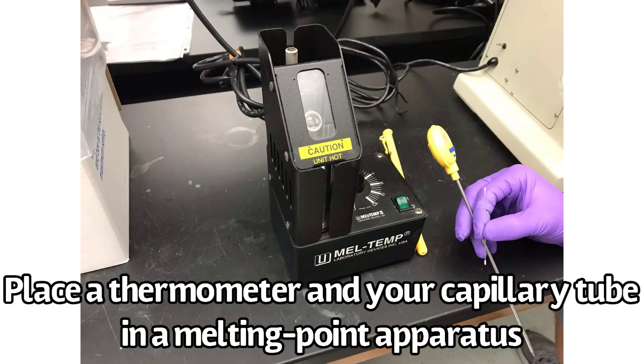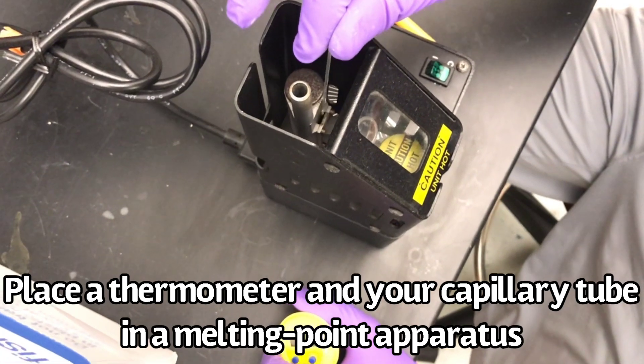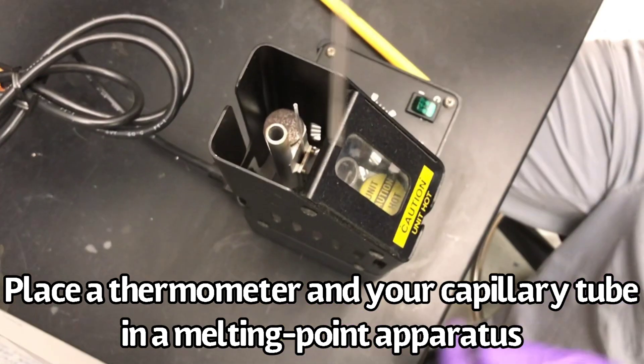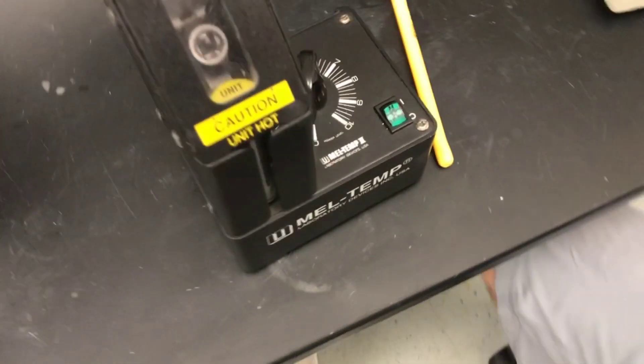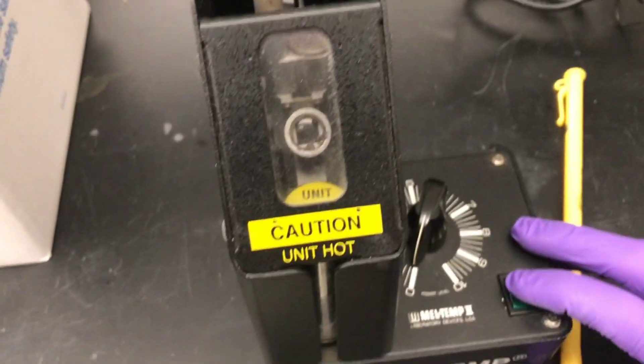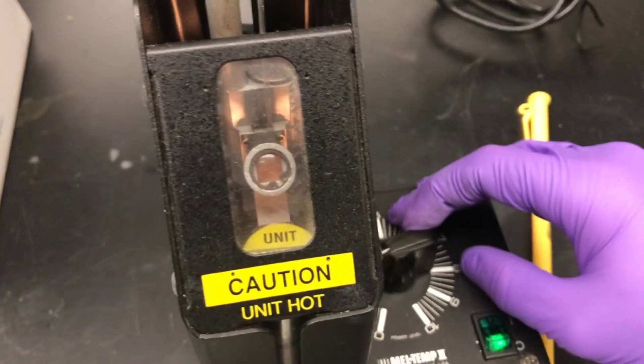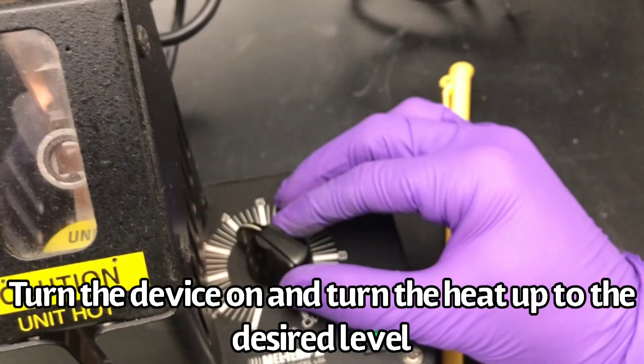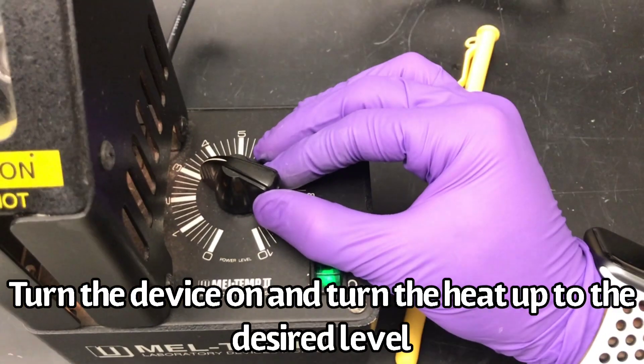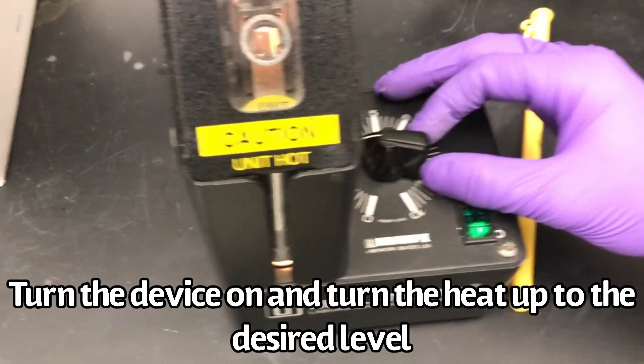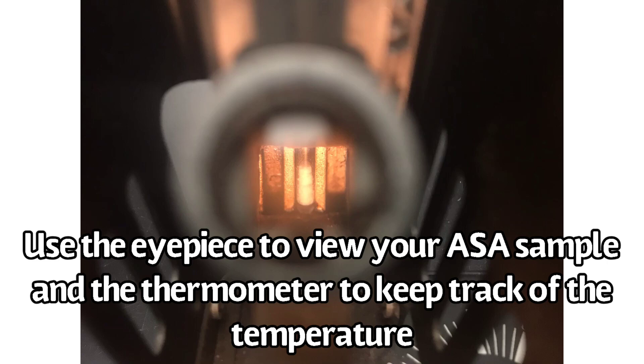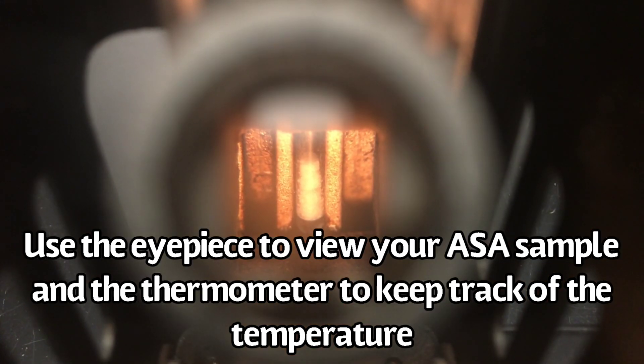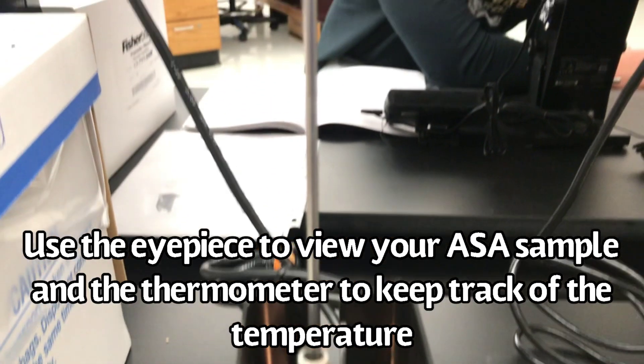Place a thermometer and your capillary tube in a melting point apparatus. Turn on the device and turn the heat up to the desired level. Use your eyepiece to view the sample and use a thermometer to keep track of the temperature.